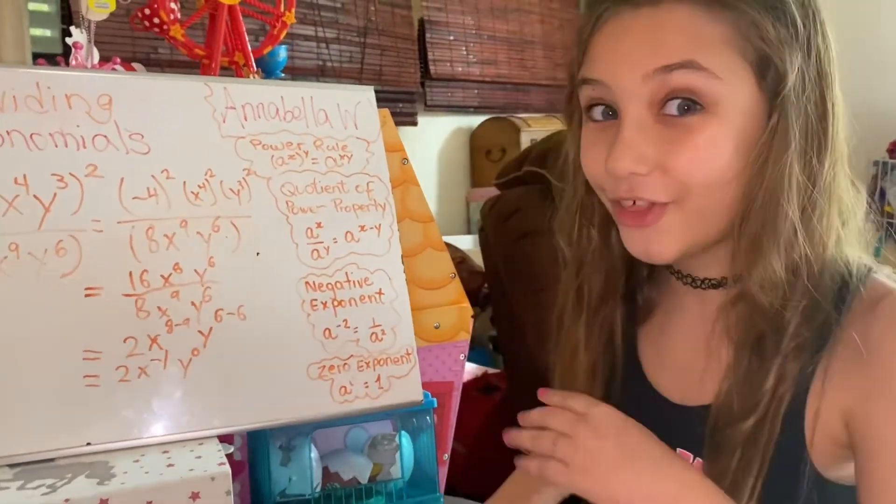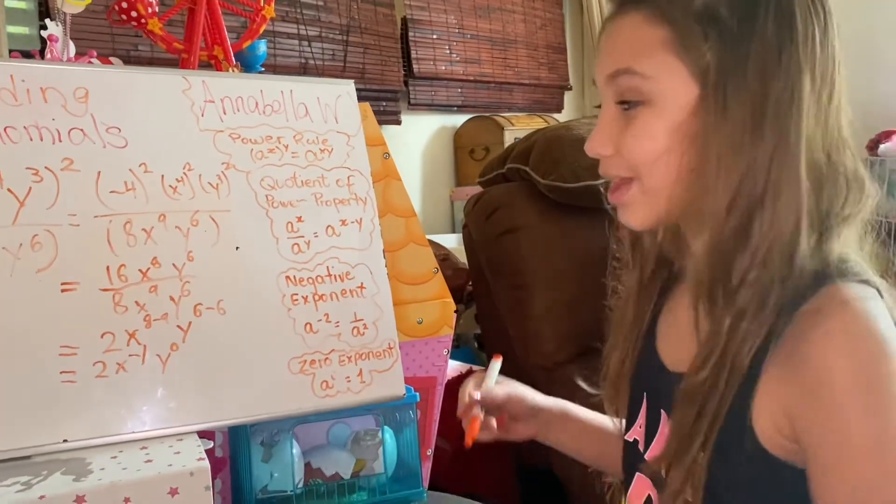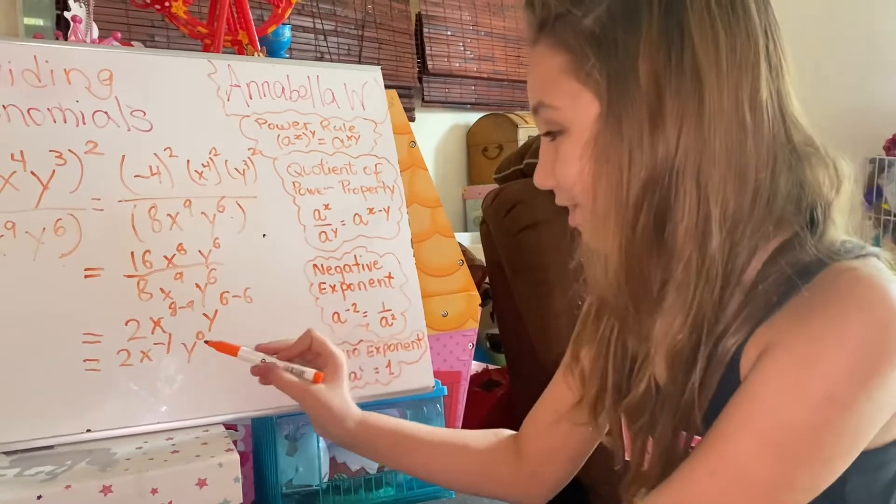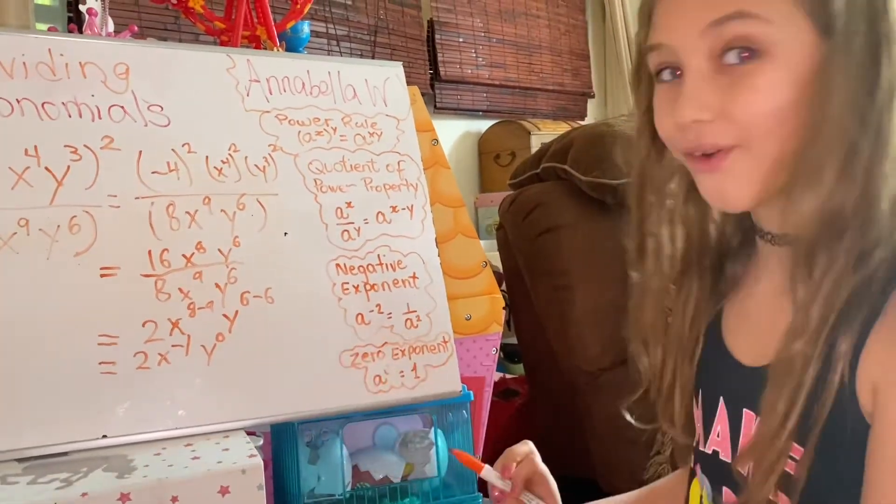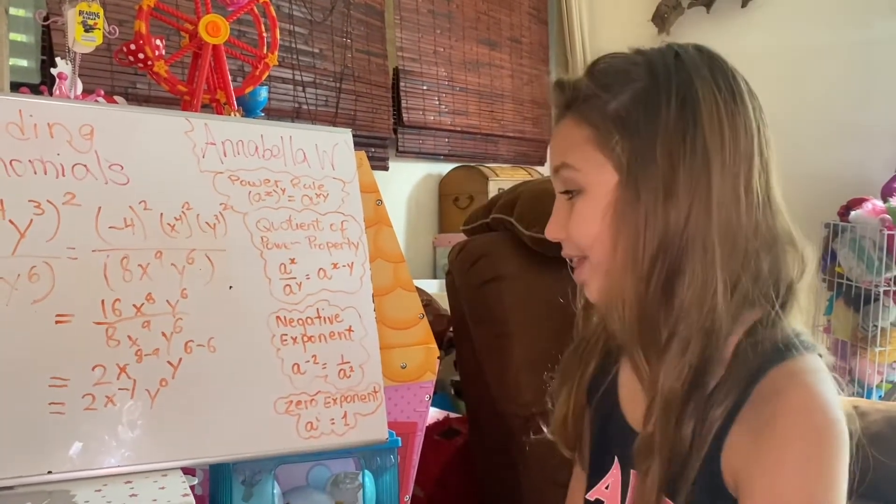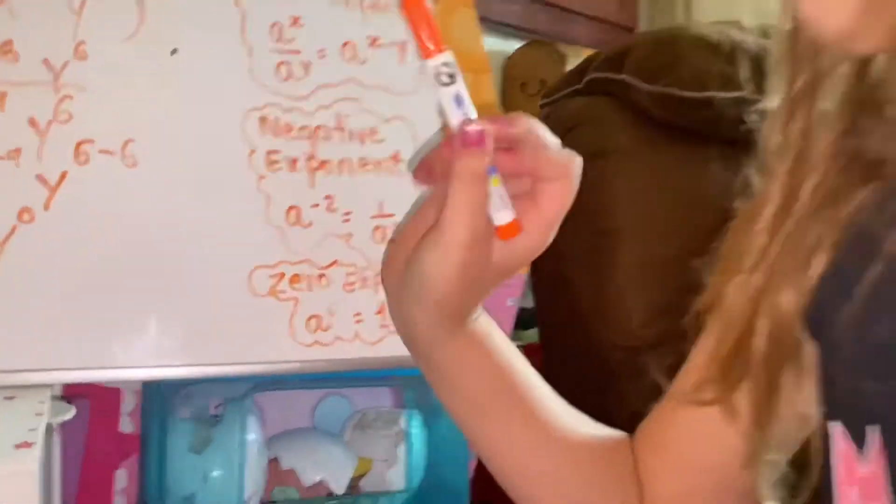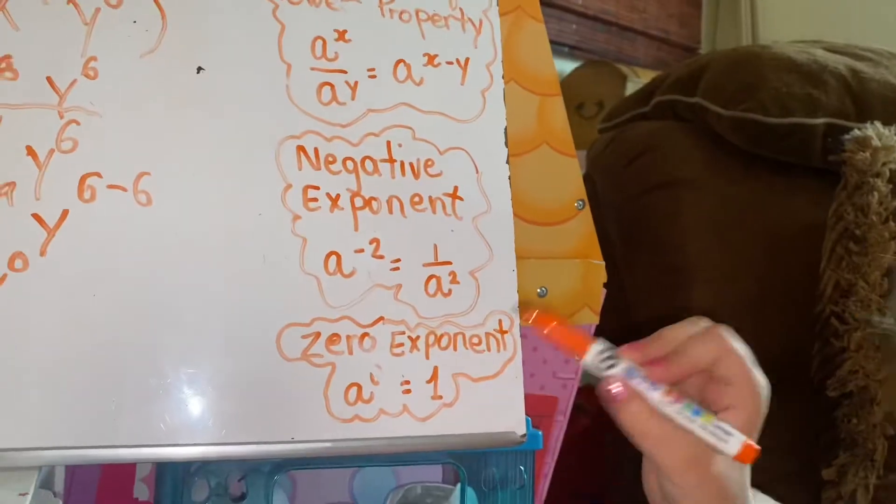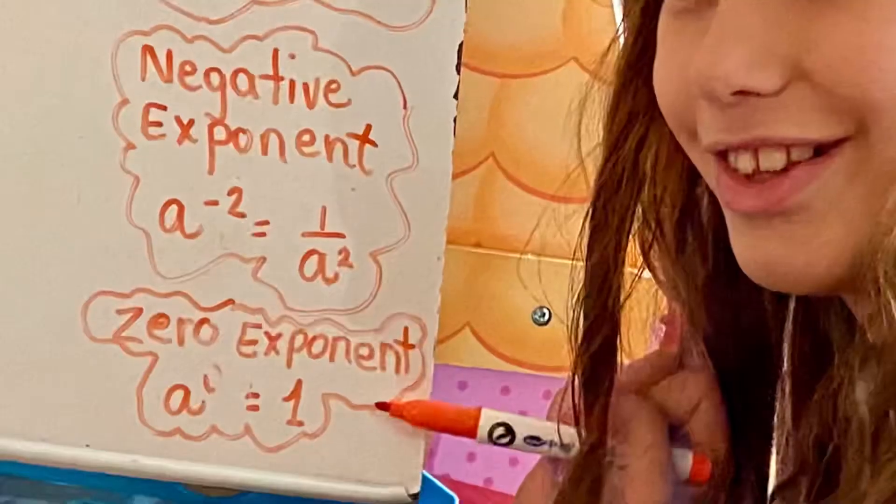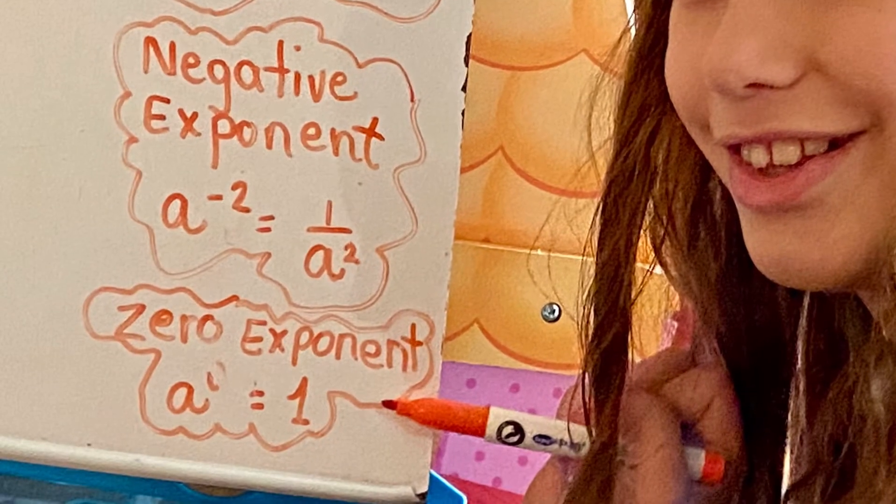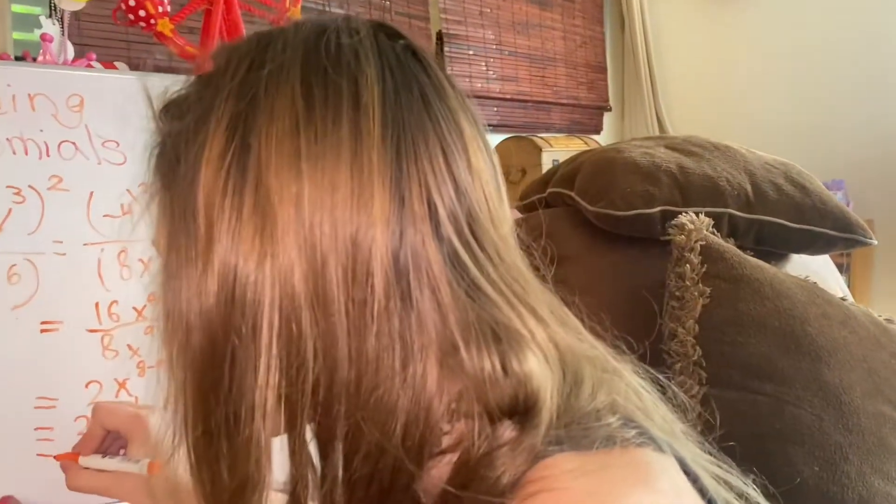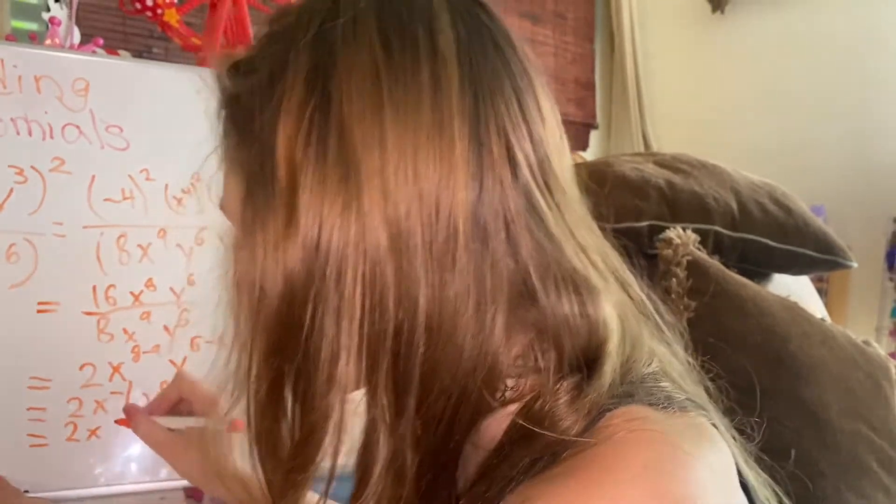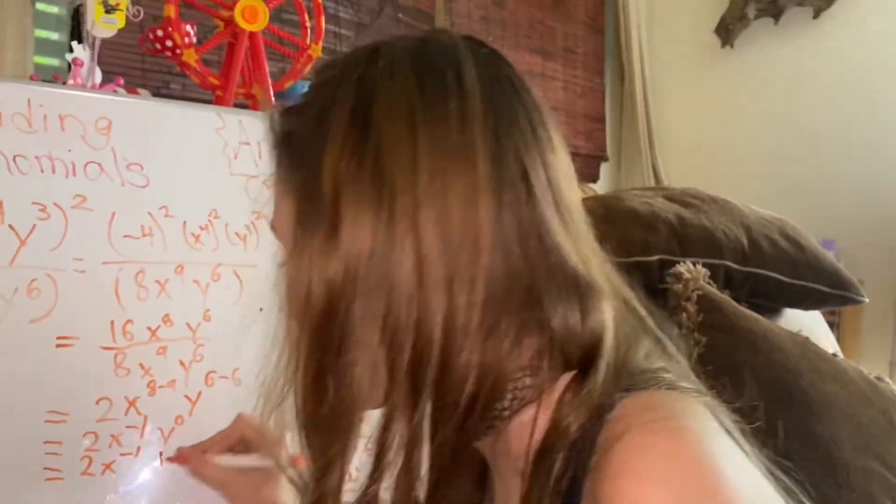But wait, that's not our answer. We still have to solve it. Look, y by the power of 0. The zero exponent rule says that when we have raised to the power of 0, it's going to be equal to 1. 2x equals 2x negative 1. Ta-da!